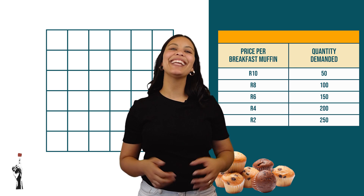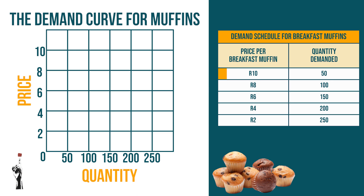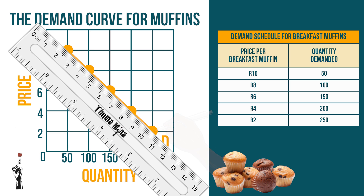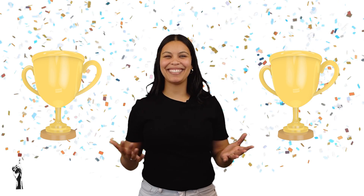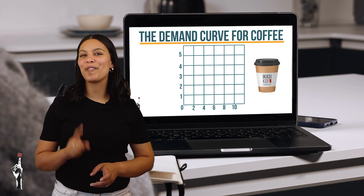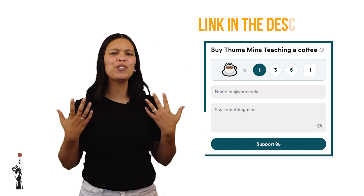Did you manage to complete it? Let's see if you got it right. Well done, Grade 9s — you have just completed your first lesson for Term 2. In the next lesson we will have a look at supply in markets. Remember to test your knowledge by scanning the QR code. Please go and revise today's lesson so that you are ready for lesson 2.